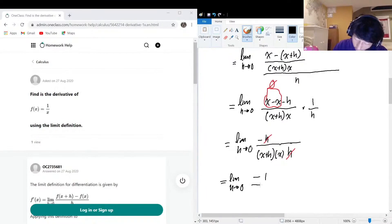of negative one over x plus h multiplied by x. Now if we do a direct substitution, h equals zero, so direct sub, we're just going to have negative one over x squared, and that's going to be our final answer, f prime of x.